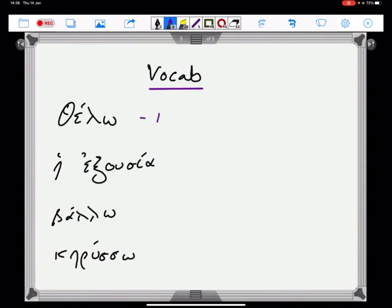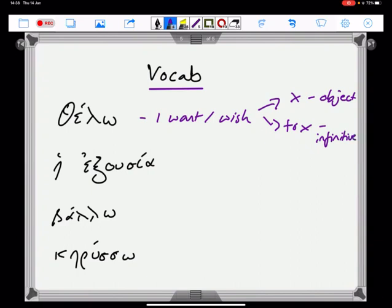ἤρξατο was already given to you so I'm not adding that in although you have got the plural on page 102 of ἤρξαντο. But you have got some other verbs here. θέλω, I want or wish. You can feel that that might want two things afterwards. You might want I want something, an object, or I want to do something which is going to be an infinitive.